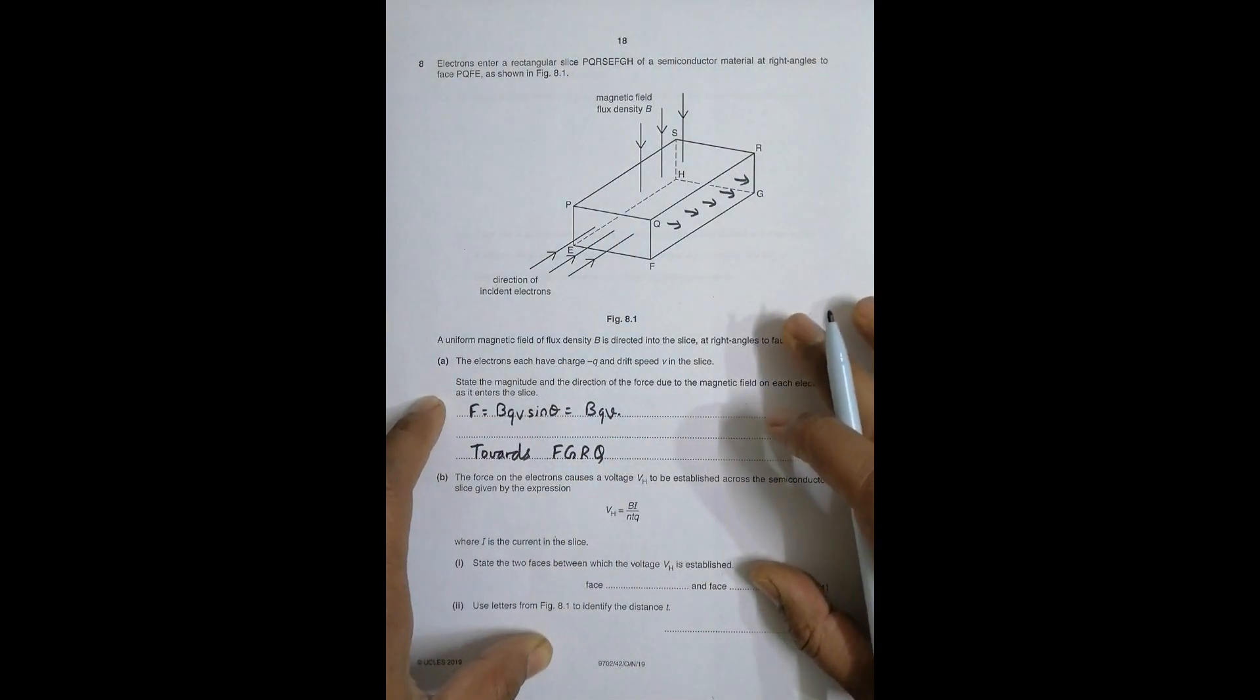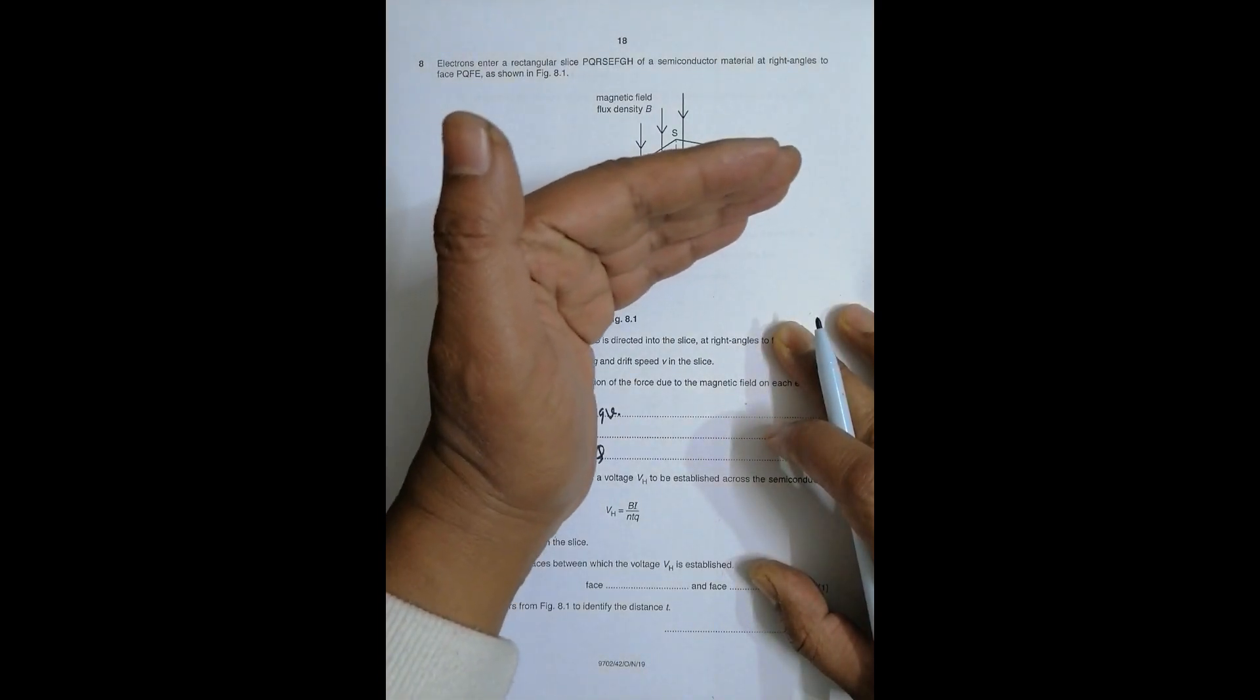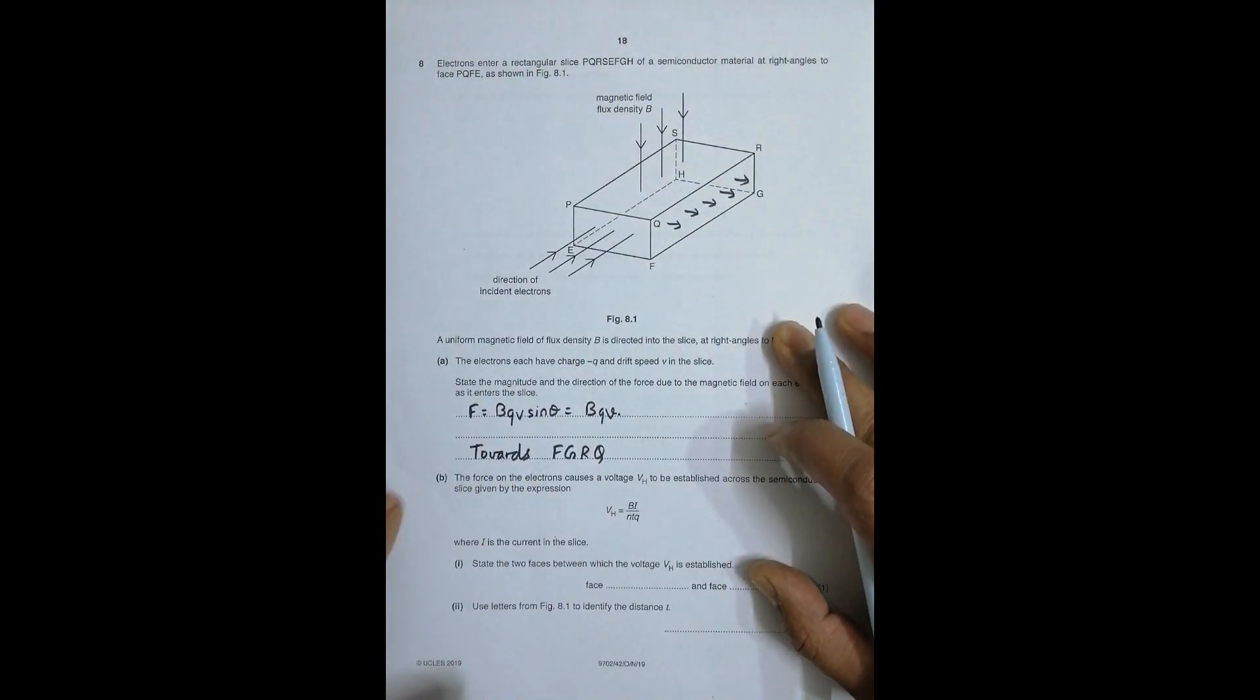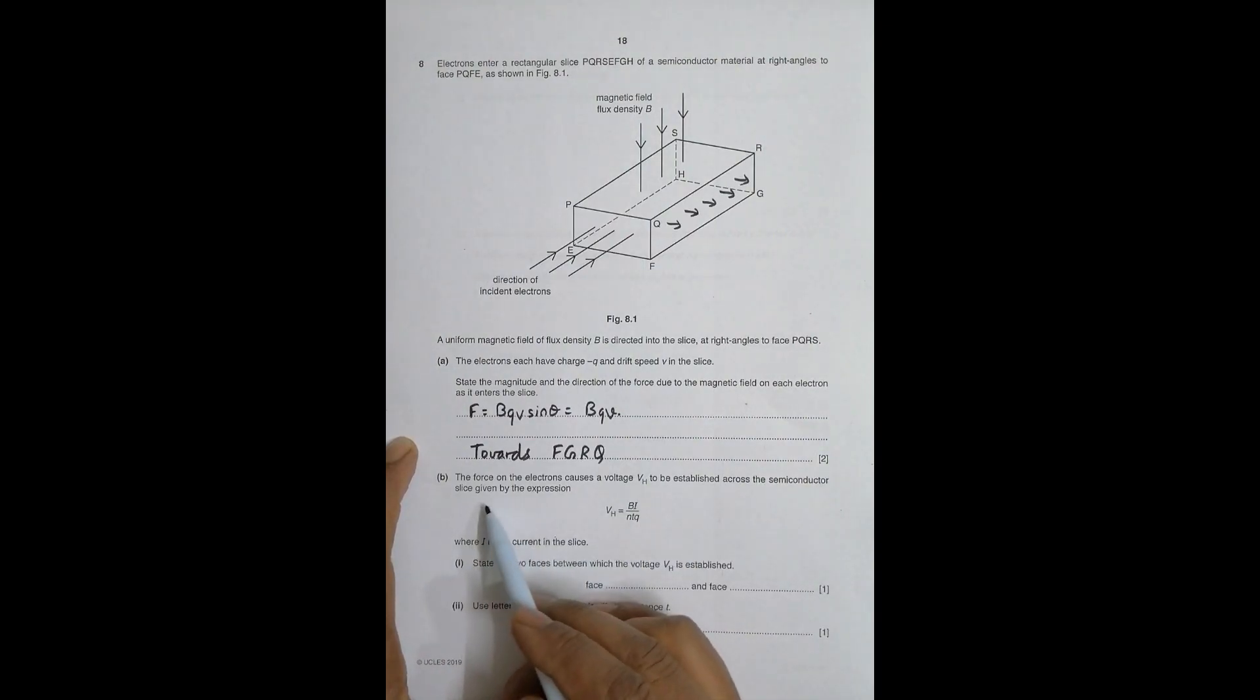So electrons will, though they are going in this direction, start to cling to this wall as they move forward. Now part B: the force on the electrons causes a voltage Vs to be established across the semiconductor slice given by this expression. This is the universal expression of the Hall voltage where I is the current in the slice.